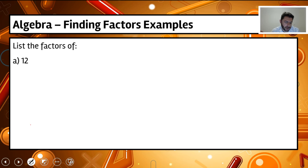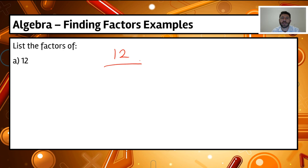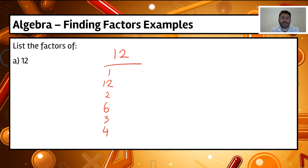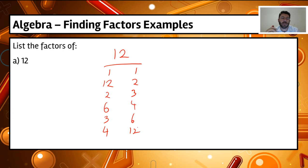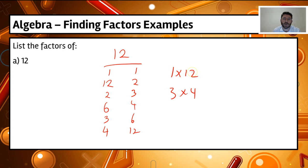Let's have a look at an example listing the factors of 12. I'll write the number and then a list of the factors underneath. The factors of 12 are 1 and 12, 2 and 6, and 3 and 4 — the numbers that multiply together to make 12. Writing these in number order: 1, 2, 3, 4, 6, and 12. Some of the factor pairs here would be 1 and 12, and 3 times 4. These are the factor pairs that multiply together to make 12.